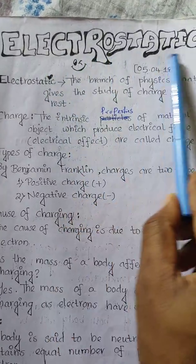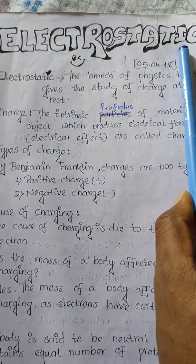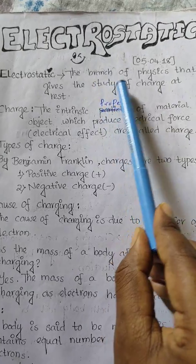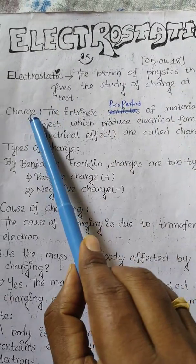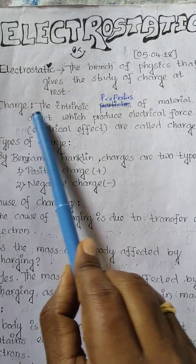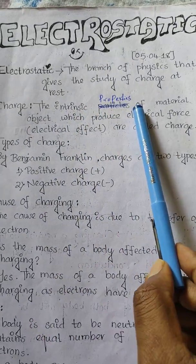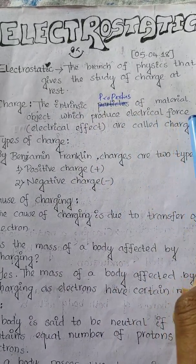Electrostatics is an important branch of physics that deals with the study of charge at rest. Charge is defined as particles like electrons and protons which produce electrical effects.